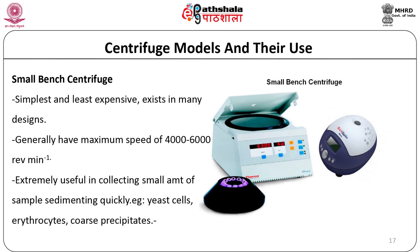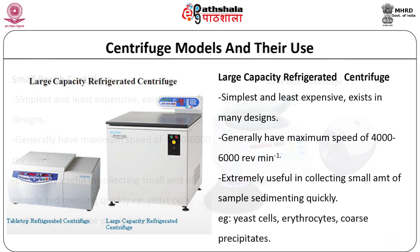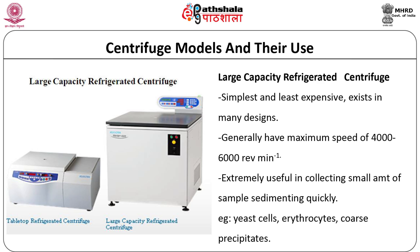Centrifuge models and their uses. The small bench centrifuge is the simplest and least expensive model and exists in many designs. They generally have a maximum speed of 4,000 to 6,000 RPM and are used for example to pellet yeast cells, erythrocytes, and coarse particles.